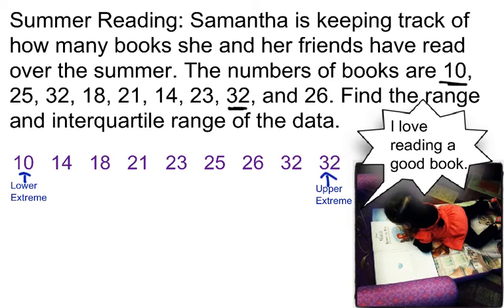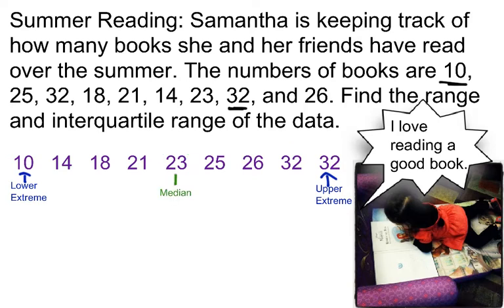Now, let's find the median, or the middle number. I'm going to start with my two on the outside and go in to the center. If there are two in the center, then I add them and divide by two — or I average them. But in this case, I only have one in the center.